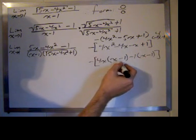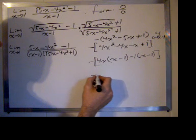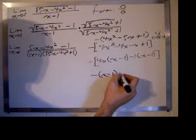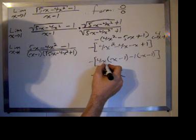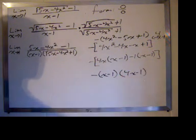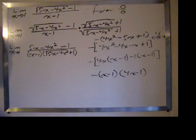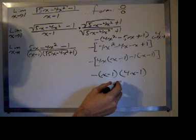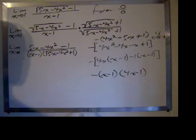This is what we want. We have a common factor of x minus 1. There's still my negative, so I'm going to pull that out. What's left inside will be 4x minus 1, and we have factored the numerator into negative 1 times x minus 1 times 4x minus 1.